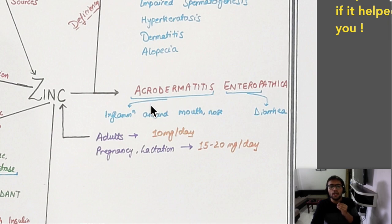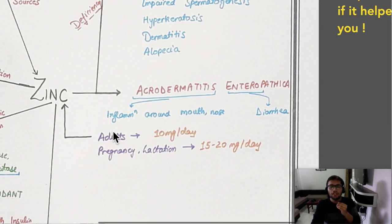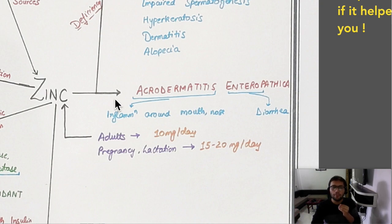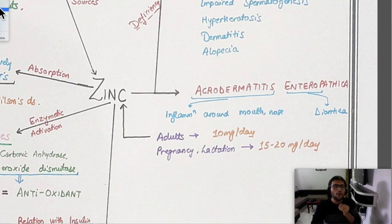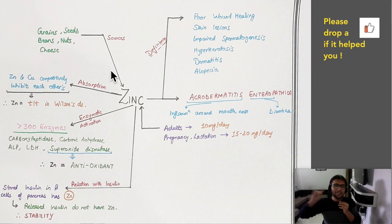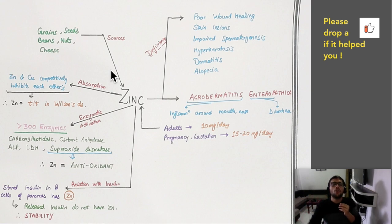For zinc requirements, just remember: adults need 10 milligrams, and during pregnancy double it to 20 milligrams. That's all you need to know about zinc — some sources, some enzymes, and one characteristic deficiency lesion, and you are done.